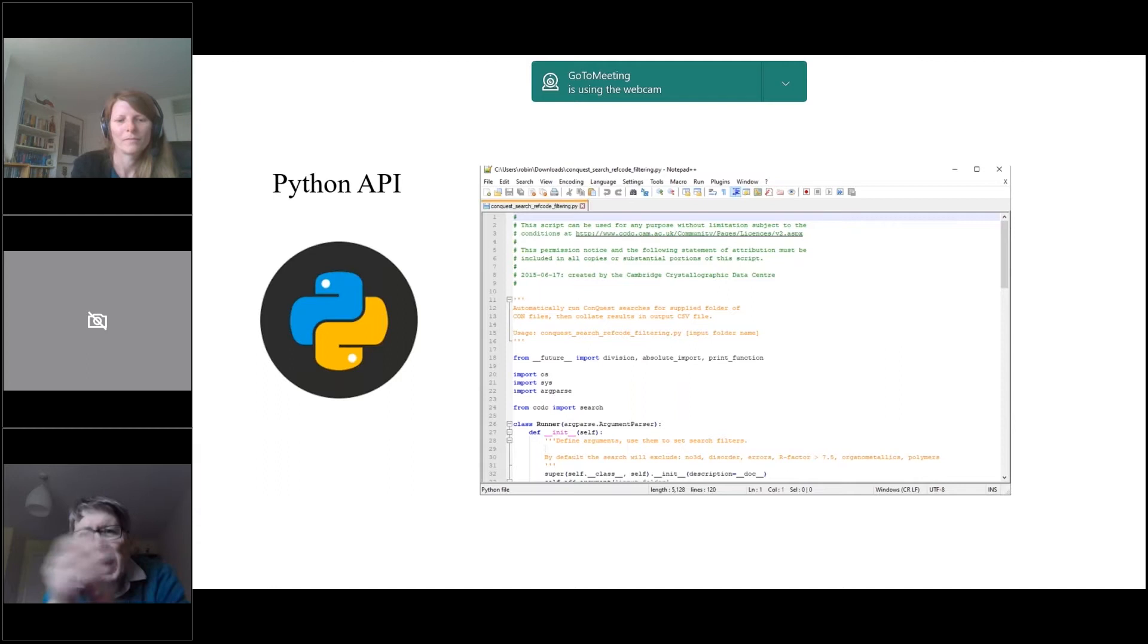Most recently and very importantly, the Python API. The disadvantage of the Python API is you've got to write Python to get your answers, but the advantage is that it opens out the whole of the CSD to the user. What a user can do really is only limited by what's in the CSD and by their imagination.